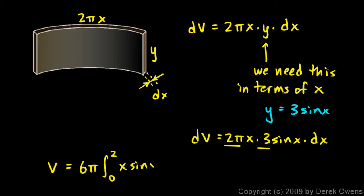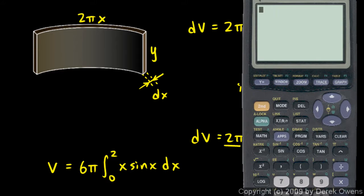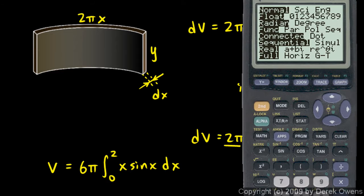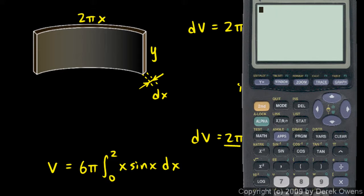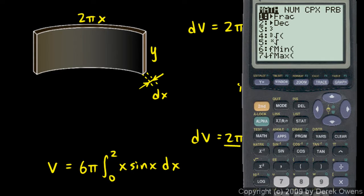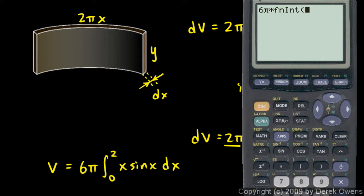So we have to integrate this function x sine x, and we're just going to do this numerically on the calculator. And here it is, here's the calculator. Let's make sure we're in radian mode and we are. So let's type this in. We want 6 pi, so I'll just do 6 times pi times, and I'll use the fn int. So I hit math 9 fn int, and I want to integrate x times the sine of x, so I'll just say x